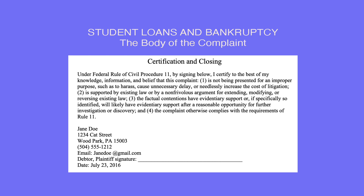Certification and Closing is the last section. Under Federal Rule of Civil Procedure 11, by signing below, I certify to the best of my knowledge, information, and belief that this complaint: (1) is not being presented for an improper purpose, such as to harass, cause unnecessary delay, or needlessly increase the cost of litigation; (2) is supported by existing law or by a non-frivolous argument for extending, modifying, or reversing existing law; (3) the factual contentions have evidentiary support, or if specifically so identified, will likely have evidentiary support after a reasonable opportunity for further investigation or discovery; (4) the complaint otherwise complies with the requirements of Rule 11. Make sure your full name, address, phone number, and email address are at the bottom. Then sign and date — you are finished with the adversary complaint.